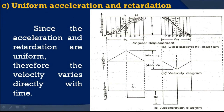When the follower reaches its uppermost position, there is a dwell period where it is at rest. After the dwell, displacement gradually decreases — that is the return motion. The rise, dwell, and return motions may follow uniform acceleration and retardation. The velocity is directly proportional to time, giving an inclined straight line in the velocity diagram.